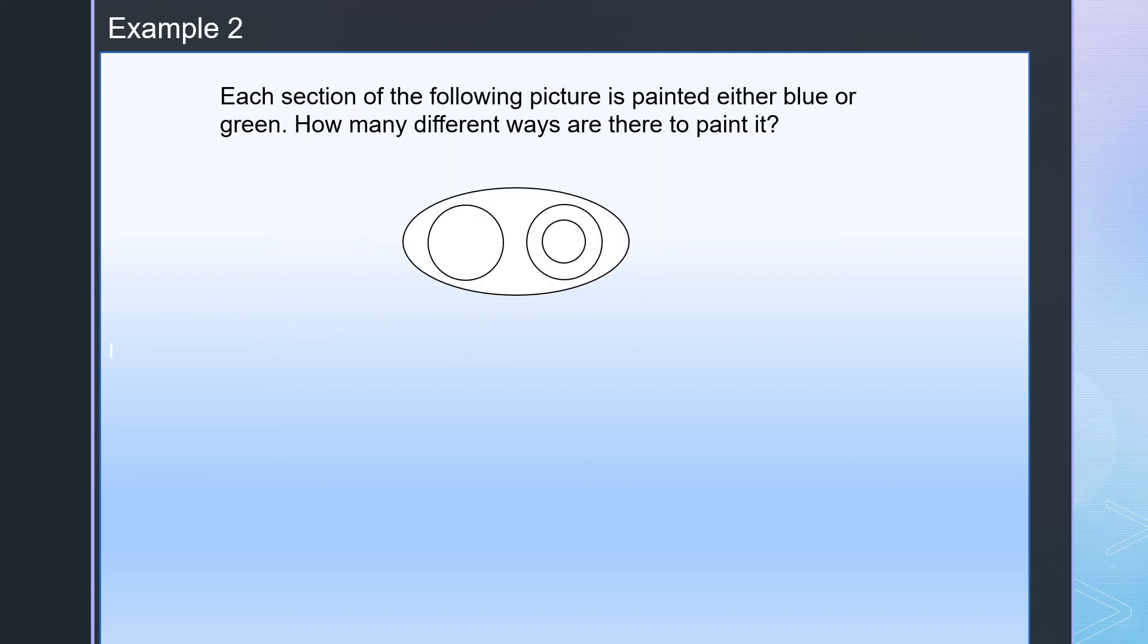Each section of the following picture is painted either blue or green. How many different ways are there to paint it? First of all, let's label the regions. This is region 1, region 2, region 3, region 4. So we have 4 regions to paint.